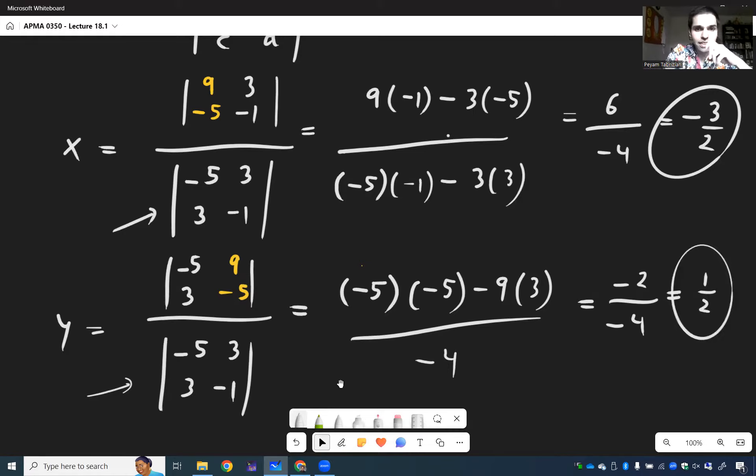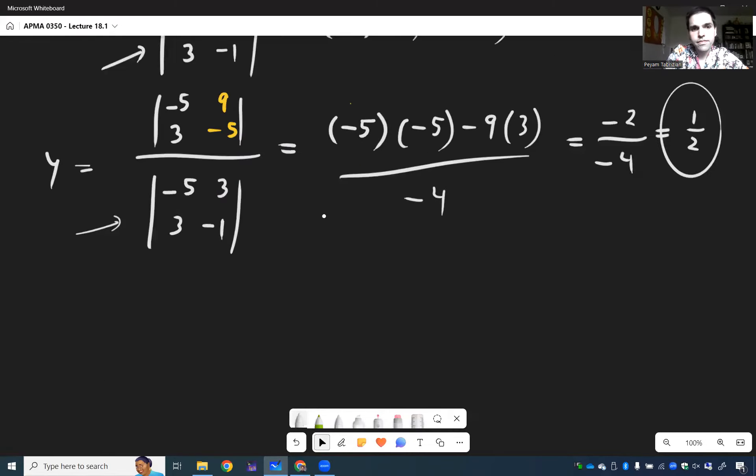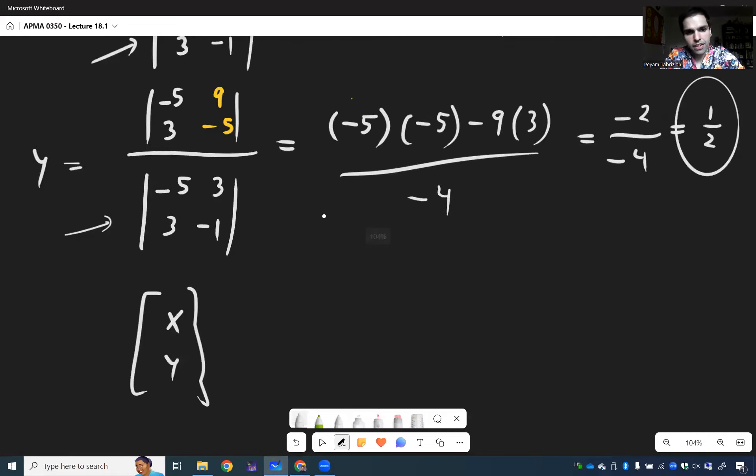So it directly gives you x and y. Well, x and y is, what was it? -3/2 and -1/2. And if you're interested, there is a proof attached to the lecture notes so you can see why this works.